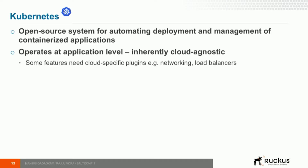Let's take a look at Kubernetes and how it solves service discovery. For those not familiar, Kubernetes is an open source system for automating deployment and management of containerized applications — sometimes referred to as a container orchestration layer. Kubernetes operates at the application or service level, so whether your Kubernetes cluster is in AWS, on virtual machines, GCP, or whatever, it doesn't care where it is running.